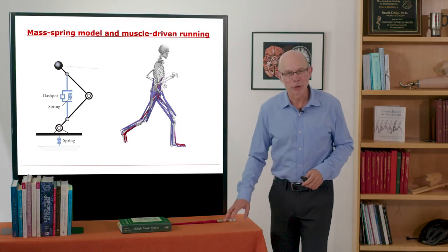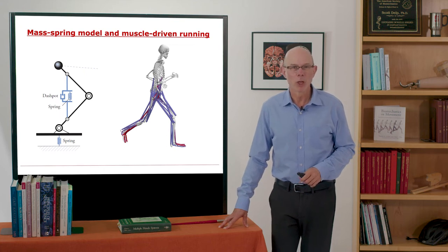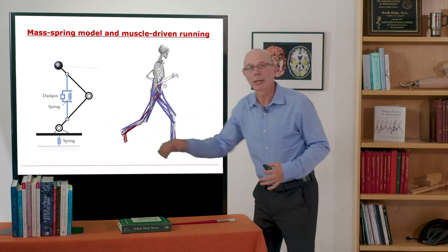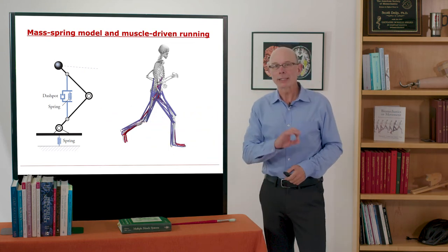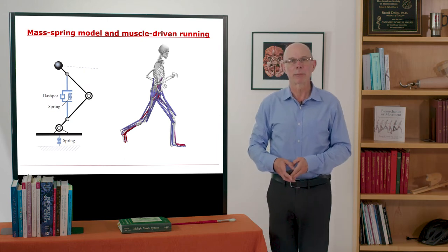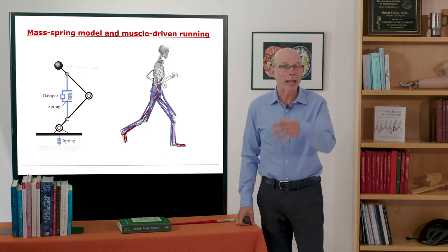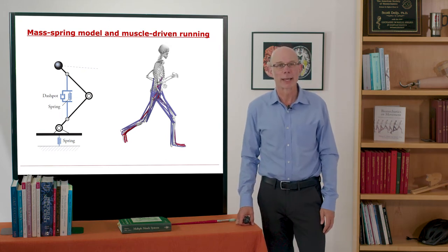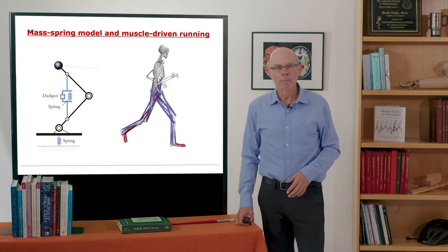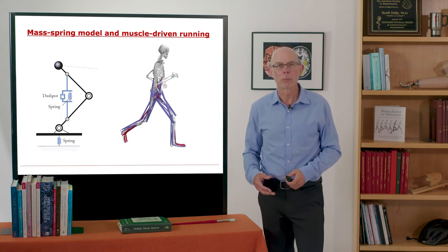Now, the spring-like behavior of muscles motivated researchers to develop models of running in which all the lower limb muscles were represented as a single spring like we looked at before. And these simple spring mass models provided valuable insight into the dynamics of running. It enabled researchers to increase running speed in a track like we saw in the tuned track example. They provide a really nice theoretical framework, but they're not intended to describe the actions of individual muscles.